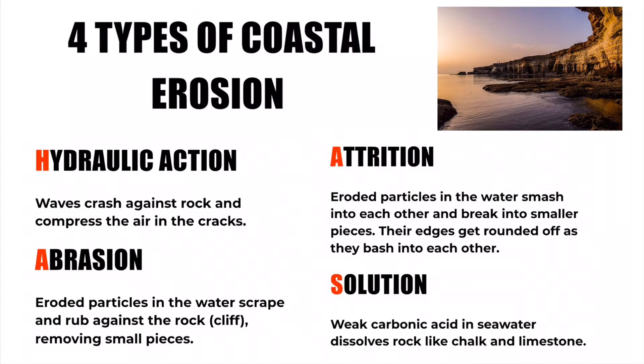Just a quick summary of the definitions we've just gone through. There are four types of coastal erosion: hydraulic action when we've got waves crashing against the rock and compressing that air; abrasion where particles get thrown at the cliff faces and scrape and rub down like sandpaper removing small pieces from the cliff; attrition where they bash into each other and we get those rounded edges; and solution involving the acidity of the water slowly dissolving the rock such as chalk and limestone.